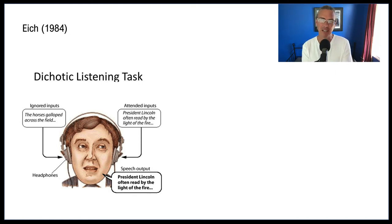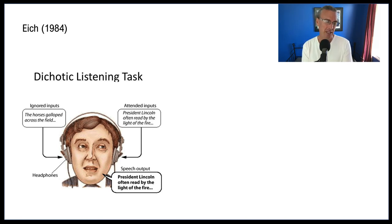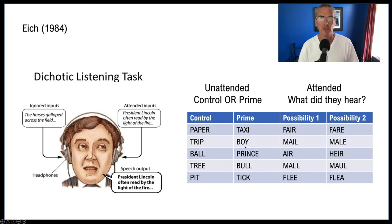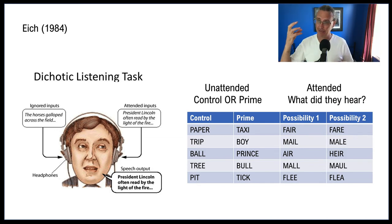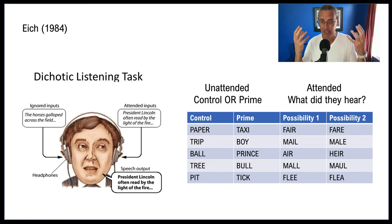The Ike 1984 study — about 20 years after Broadbent, when people were still trying to understand attention and the conscious mind. Again using the dichotic listening task, here's the interesting situation: in the attended ear, participants were shadowing single words. Critically, at the same time as each word was presented to the attended ear, another word was presented to the unattended ear.